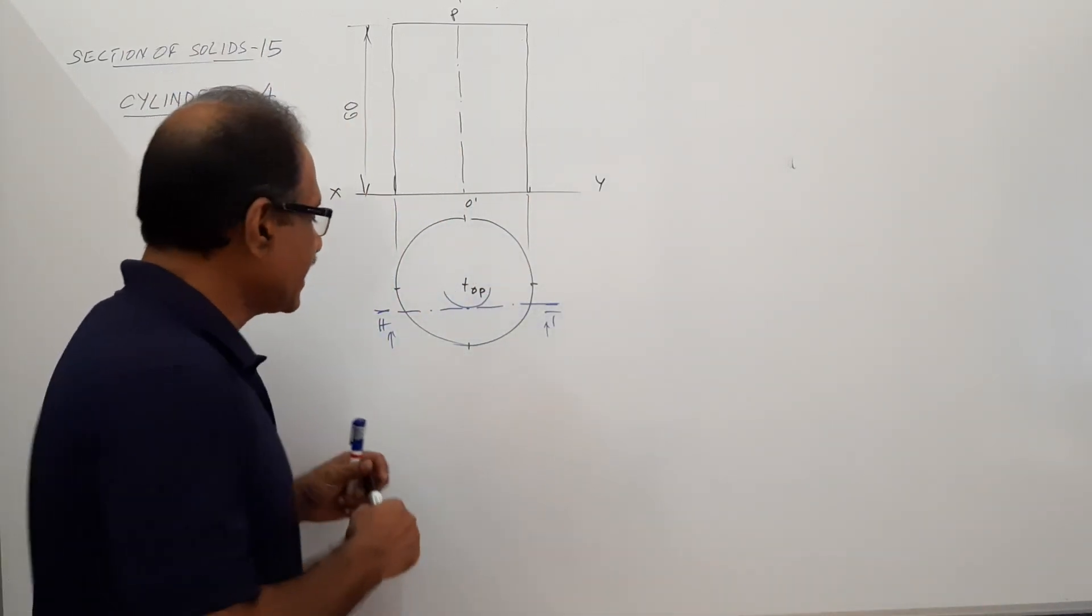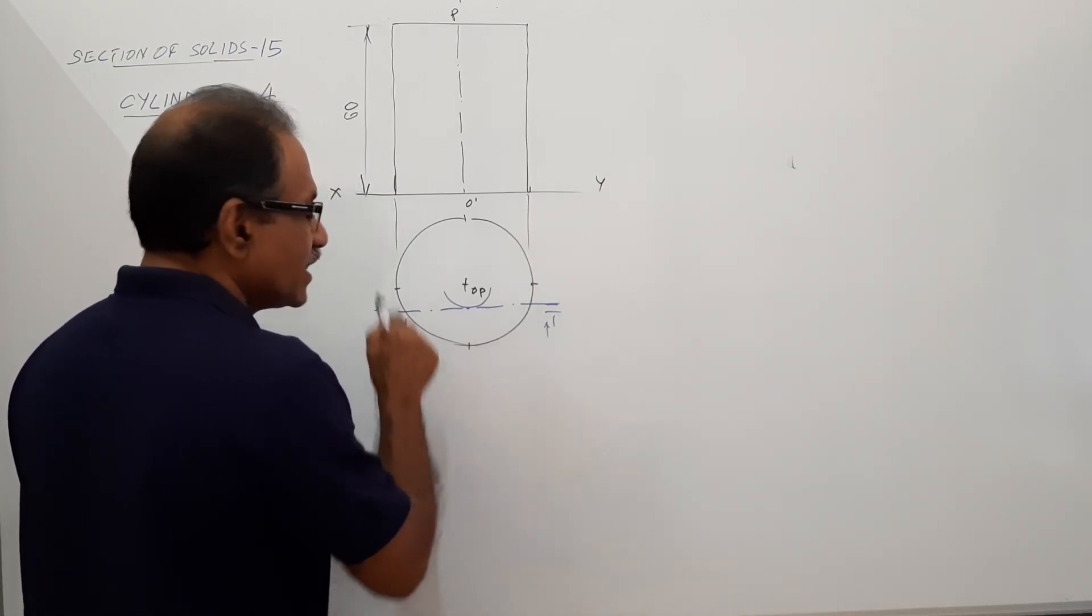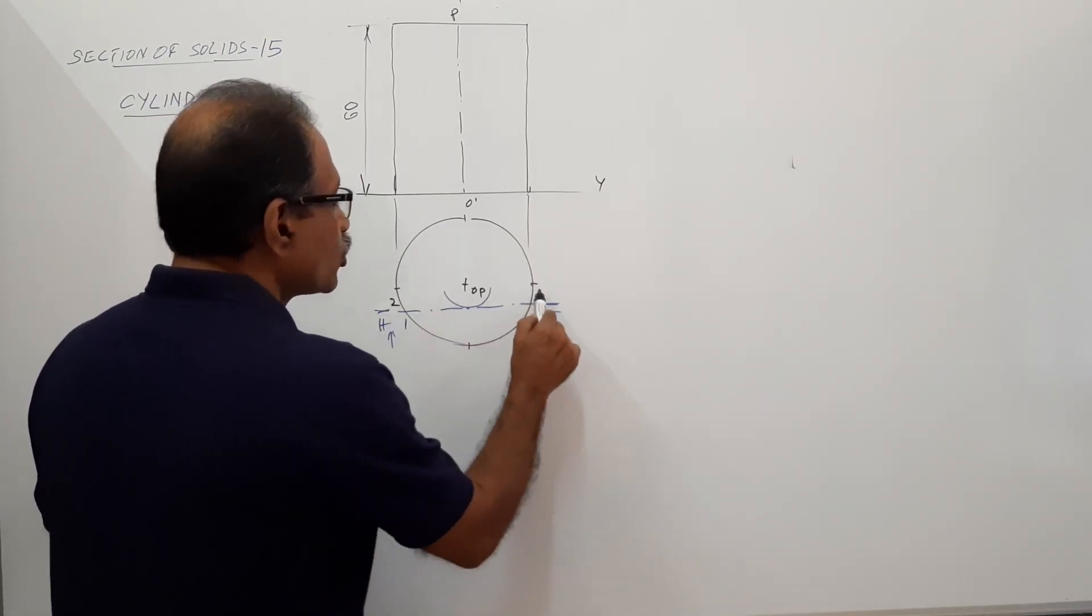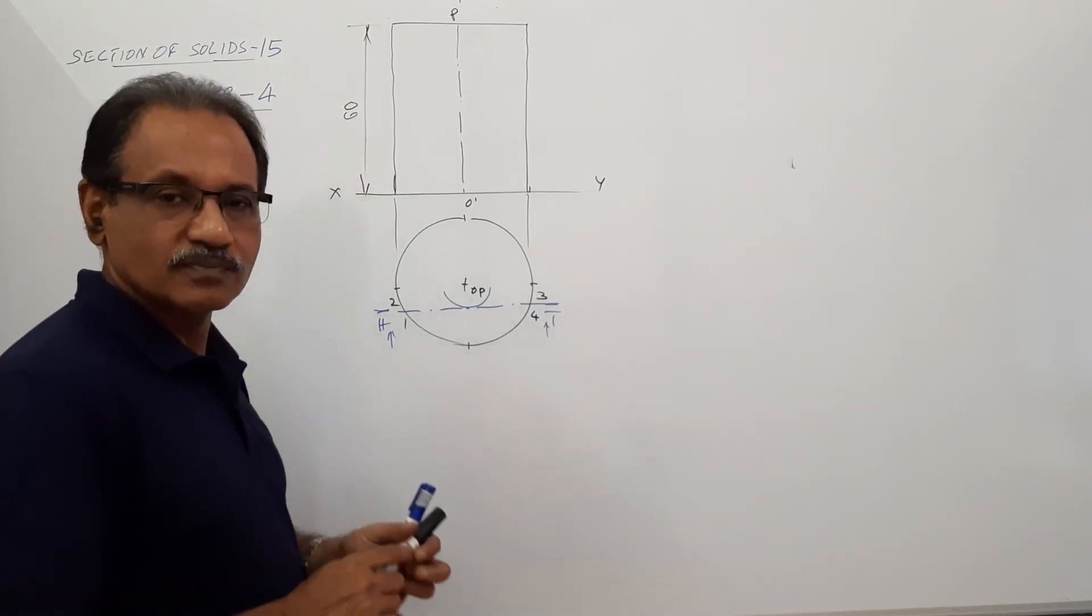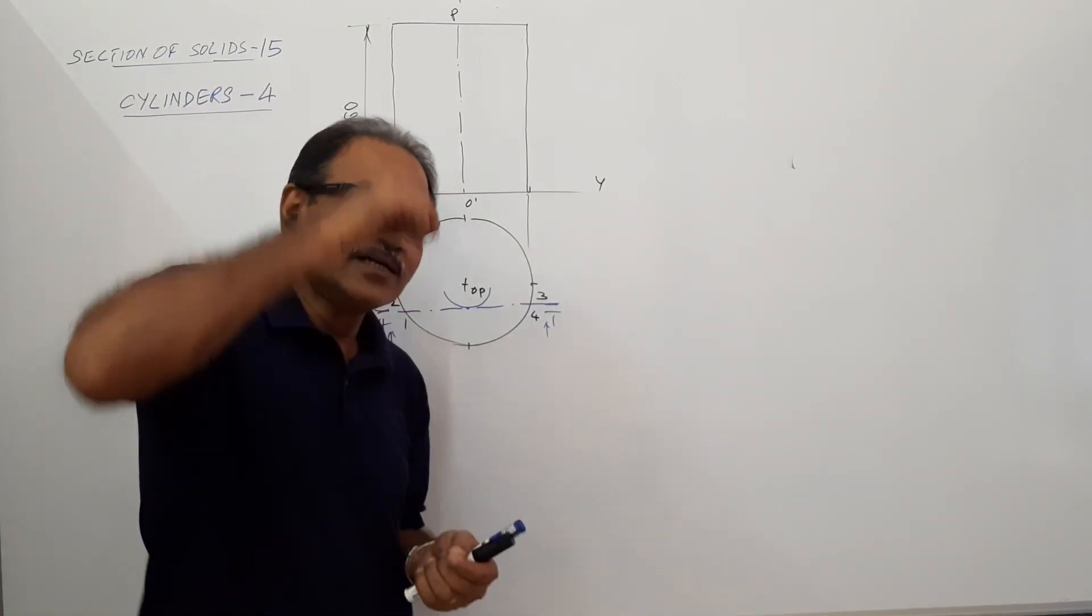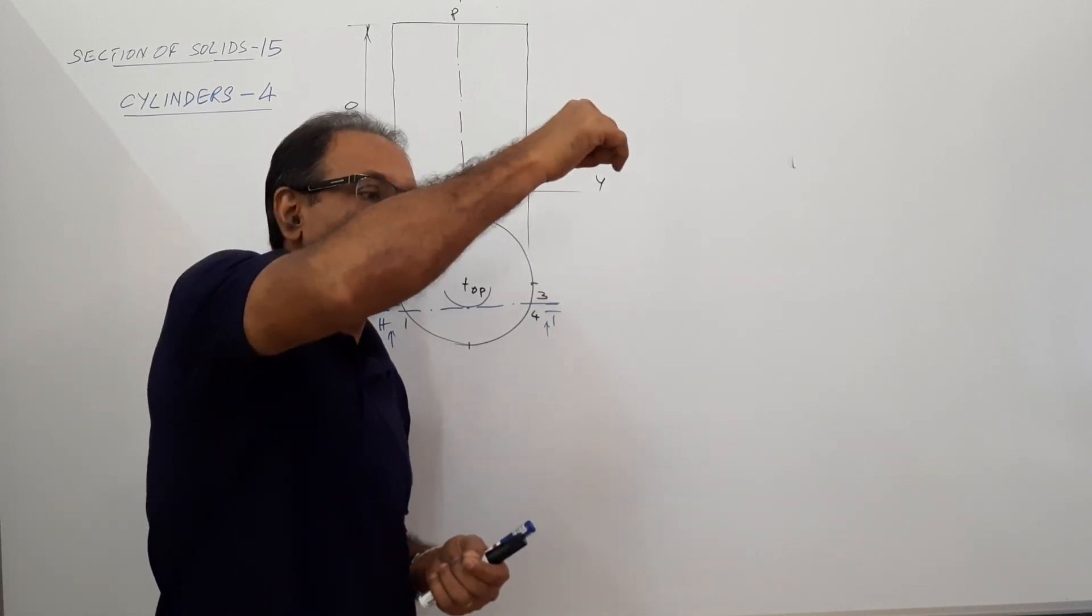Now where all does it cut? It cuts the base at 1, top at 2, top at 3, and base at 4. Only 4 points.